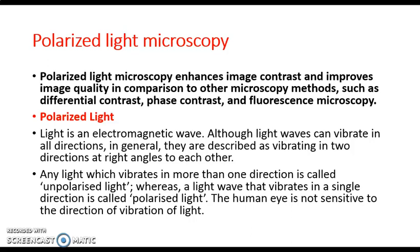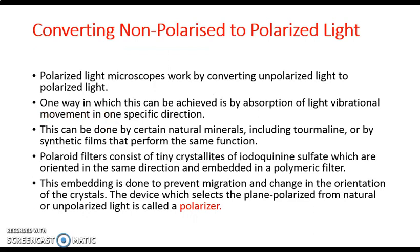When light vibrates in a single direction, our eyes cannot see the different types of vibrations, so we use microscopes. We want to convert this non-polarized light to polarized light — that is, to convert light which is capable of vibrating in all directions into light which vibrates in a single direction. That is why we use the polarized microscope, because it helps in increasing image contrast.